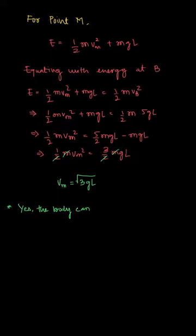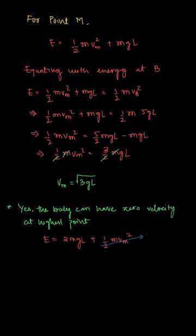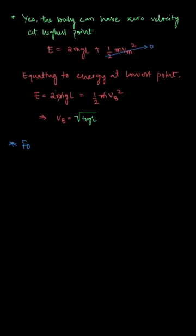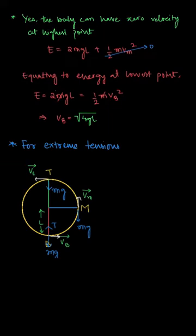We were asked whether the body can have zero velocity at the topmost point. The answer is yes. For that condition, we write the energy equation at the topmost point with velocity zero, so kinetic energy is zero and only potential energy remains. Equating the energy at topmost point to energy at bottom most point and solving, the condition is that the velocity at the bottom most point should be root over 4gl.